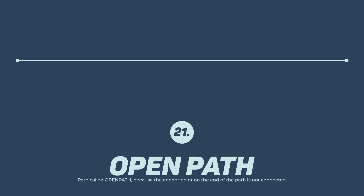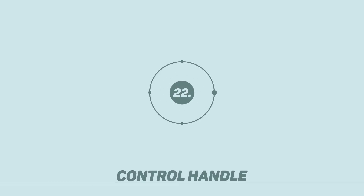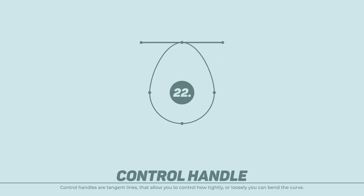Open Path — called Open Path because the anchor point on the end of the path is not connected. Control Handles for Anchor Point — control handles are tangent lines that allow you to control how tightly or loosely you can bend the curve at each of them.